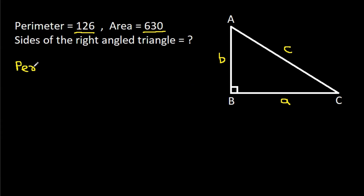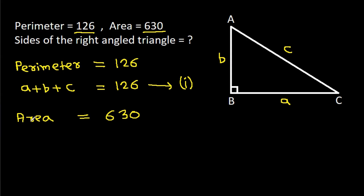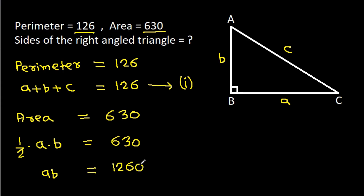We have perimeter is 126, and perimeter will be A plus B plus C equals 126. Suppose it is equation 1. We have area is 630, and area will be one-half times base A times height B equals 630, so AB equals 1260. Suppose it is equation 2.